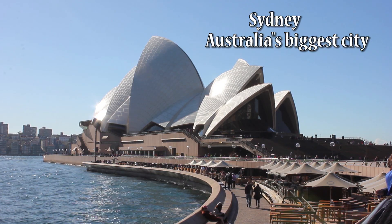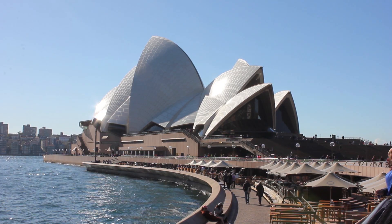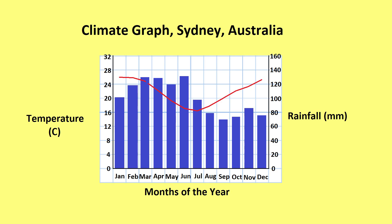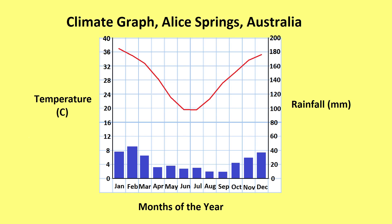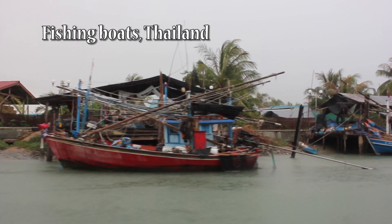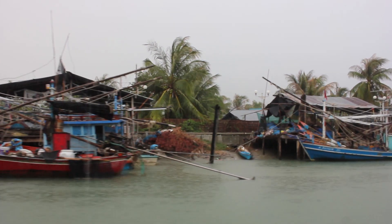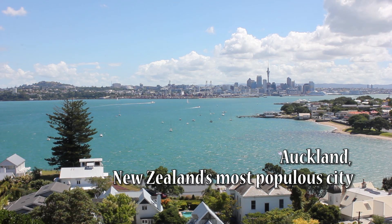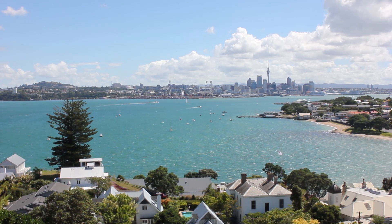Coastal areas tend to have a higher population than inland areas. For instance, the vast majority of Australians live within 100 kilometers of the coastline. There are several reasons for this. Coastal areas have a much milder climate than inland areas and richer resources such as fisheries. Coastal areas were also the first areas reached by immigrants when new countries like Australia, New Zealand, and the Americas were first settled.